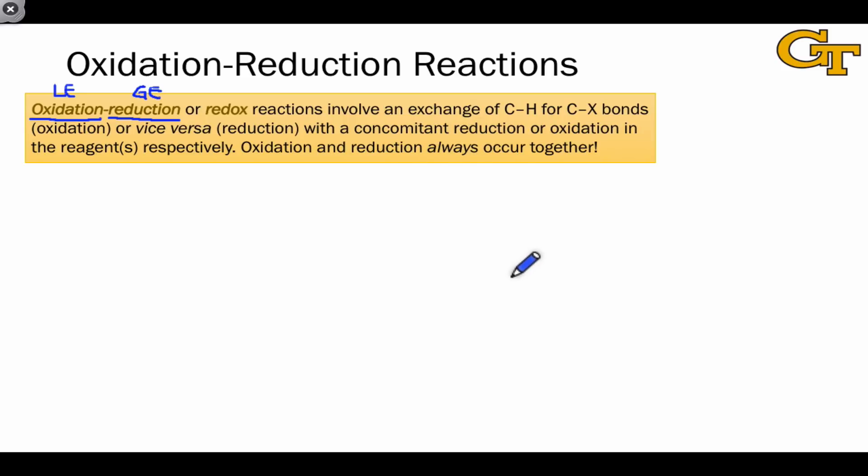Oxidation and reduction in an organic context always involve the exchange of a CH bond for a CX bond, or vice versa. As this happens at carbon, there is a simultaneous reduction or oxidation in a reagent that occurs as well. And this is because oxidation and reduction always occur together. This should be familiar from your introductory chemistry course, and it's still true now.